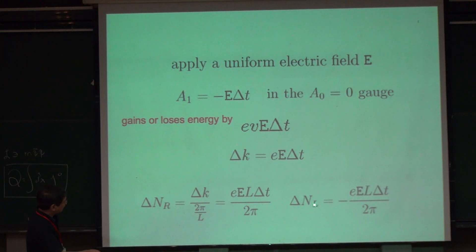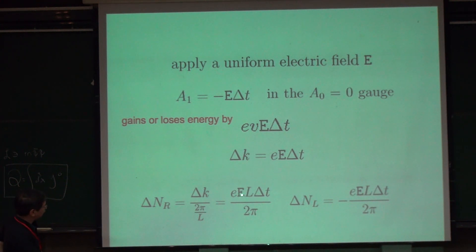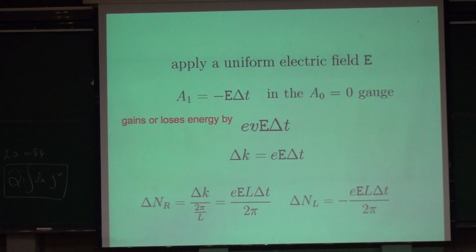And similarly, delta N_L is just the negative of that. The key feature is that it is proportional to electric field E and proportional to delta T. The remaining factors are parameters necessary for dimensional reasons.